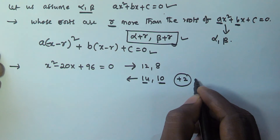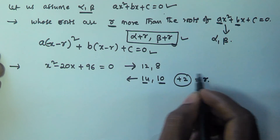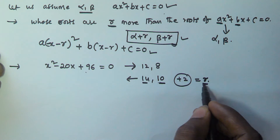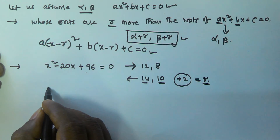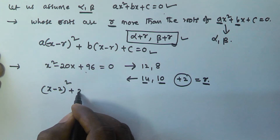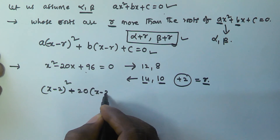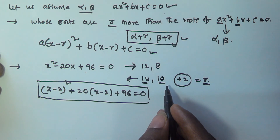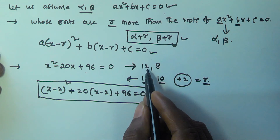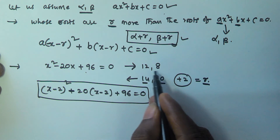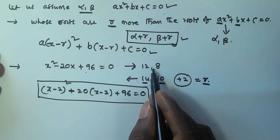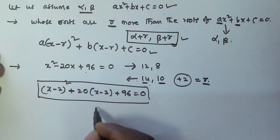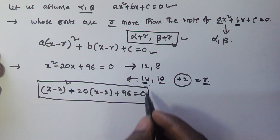Since r is 2, we substitute x minus 2 in place of x in the original equation. The new equation becomes (x - 2)² - 20(x - 2) + 96 = 0. The roots of this equation are 14 and 10, which are 2 more than the previous roots of 12 and 8. Simplify this equation and you will get the quadratic equation whose roots are 14 and 10.